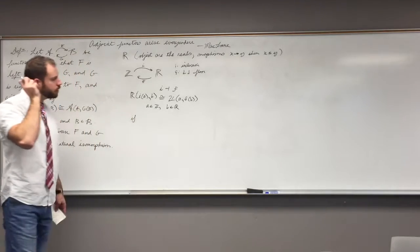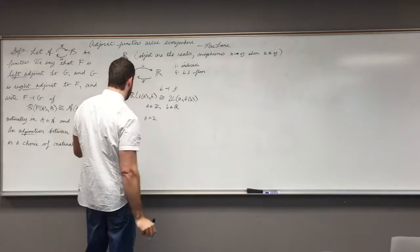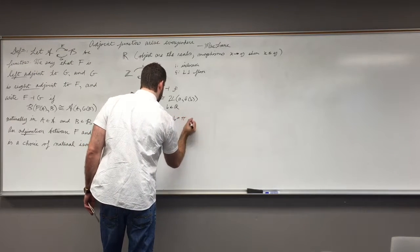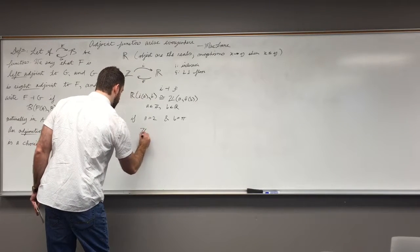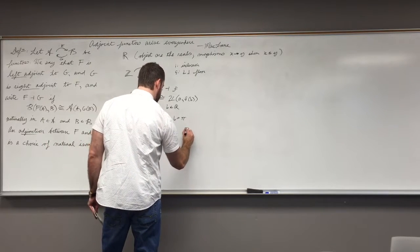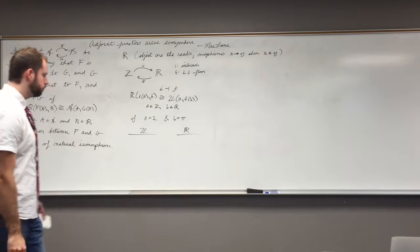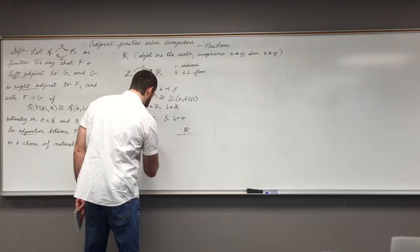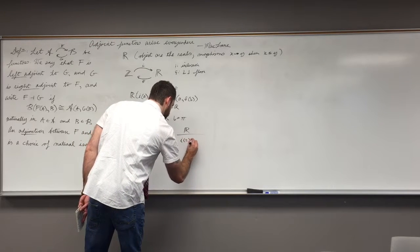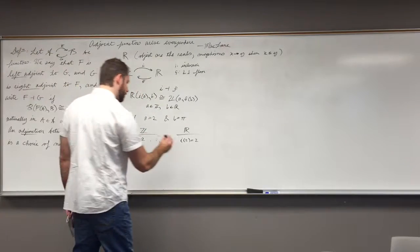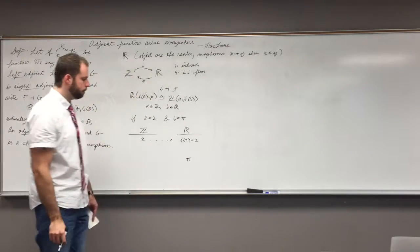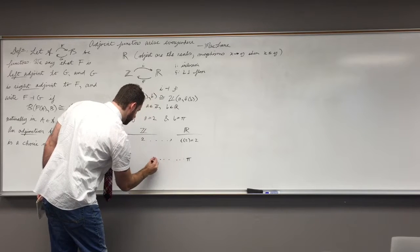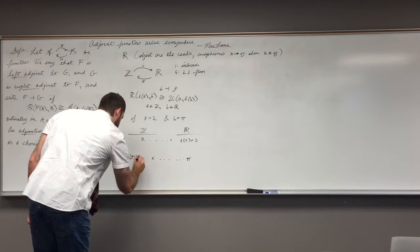if A were to be 2 and B were to be something like pi, then so here's our category of integers, here's the reals, here's 2, the inclusion functor is going to map 2 to I of 2, which is just 2, and B is pi. The floor function functor is going to map pi to the floor of pi, which is just 3.